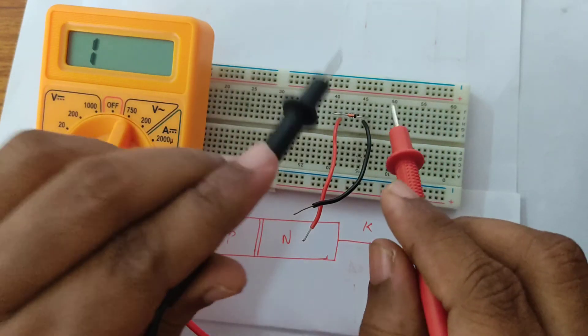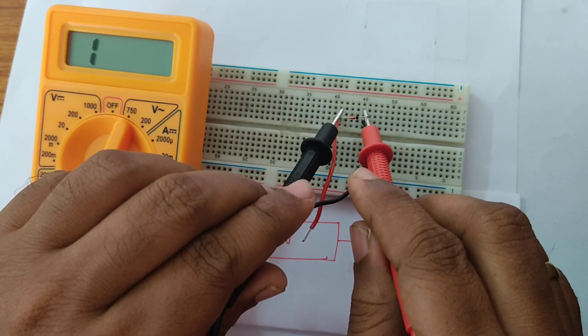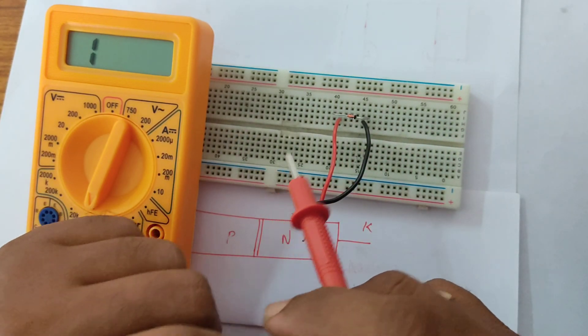But if I change the polarity, there is no resistance. Resistance is infinity. So you can do the same process for Zener and PN diode the same.